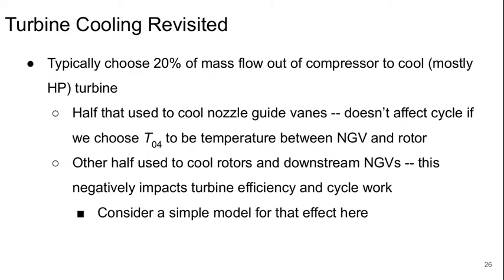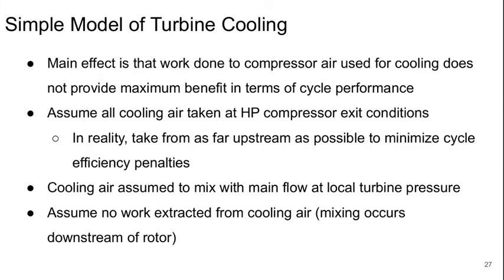We can look at a simple model of turbine cooling to make quantifications. The model captures the main effect that work done to compress air used for cooling does not provide maximum benefit in cycle performance. We assume all the cooling air is taken at the high pressure compressor exit conditions, and that the cooling air mixes with the main flow at the local turbine pressure — that's a pretty good assumption. We also assume no work is extracted from the cooling air, meaning the mixing occurs downstream of the rotor.